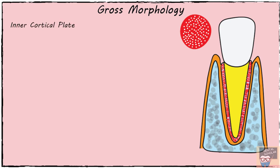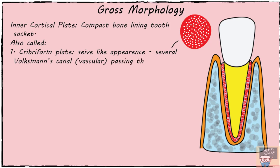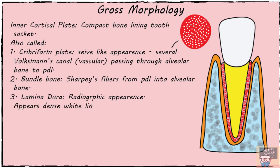The inner cortical plate — the compact bone lining the tooth socket — is known by three different names. First, the cribriform plate, because of its sieve-like appearance caused by several Volkmann's canals, which are vascular channels passing through the inner alveolar bone to the periodontal ligament. It is also called bundle bone because Sharpey's fibers from the periodontal ligament embed into the alveolar bone. The third name is lamina dura, based on its radiographic appearance as a dense white line on the radiograph.